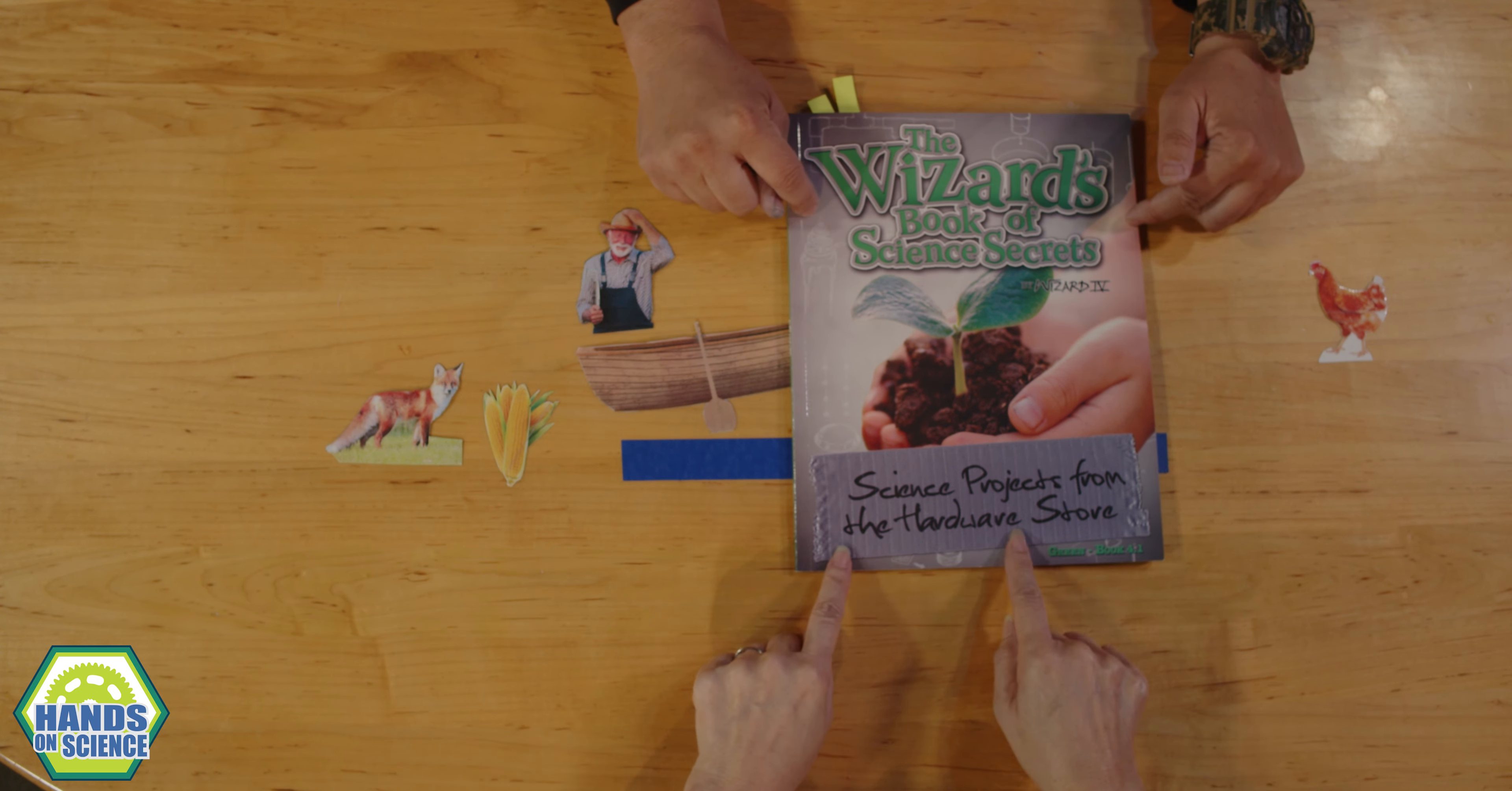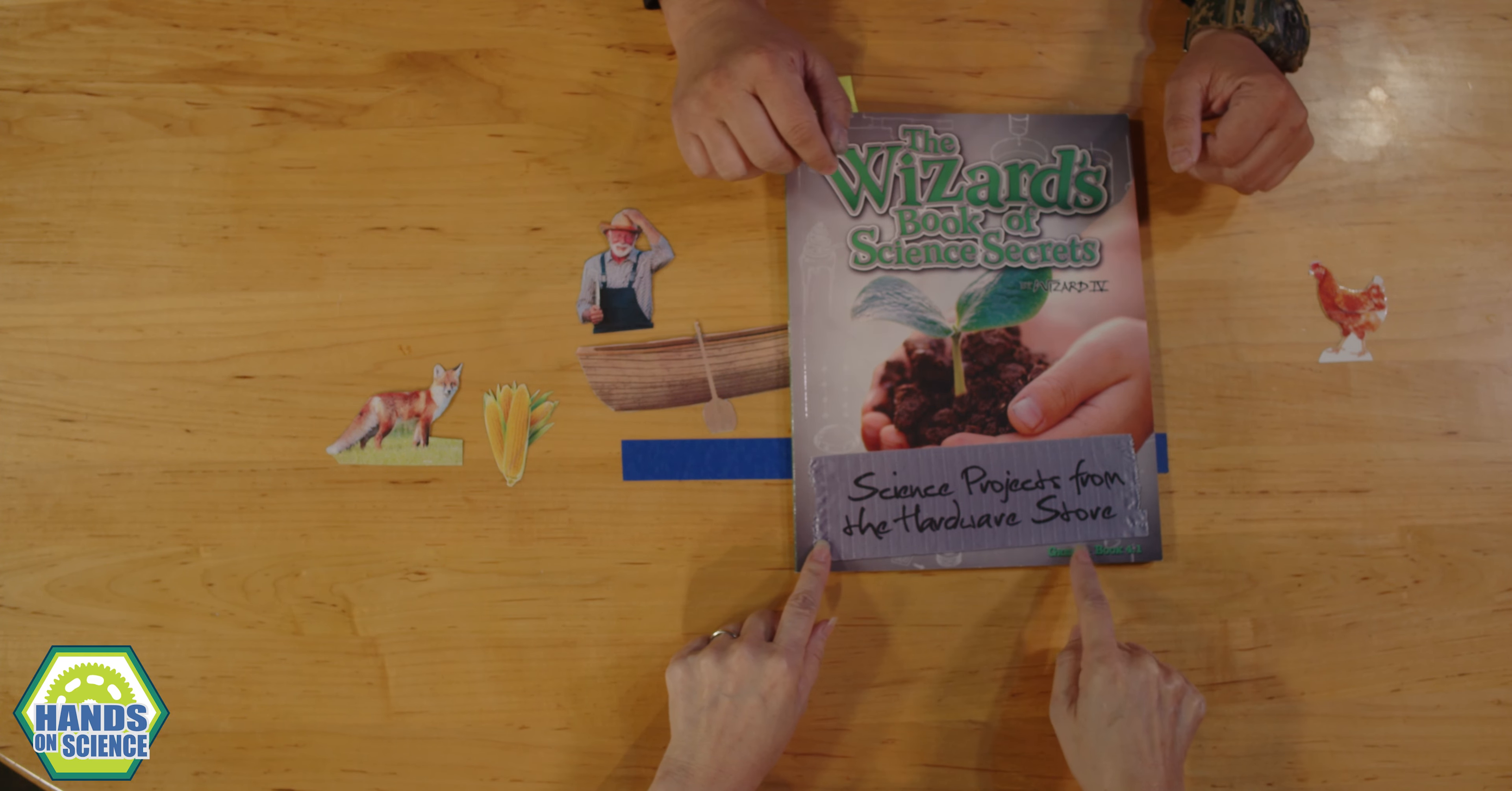But again, you can pick up a copy of this. There's this activity in there. There's 24 more activities in this room for you. Yep, it's in the green volume. And again, it's HardwareScienceHawaii.com.